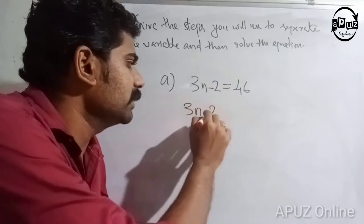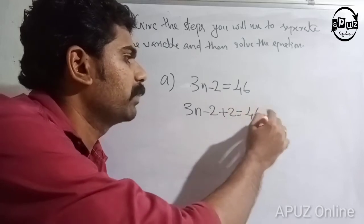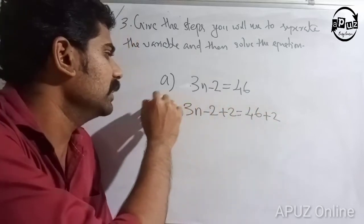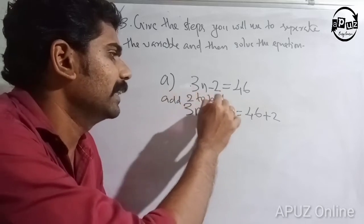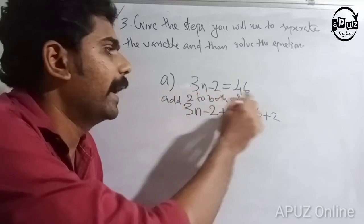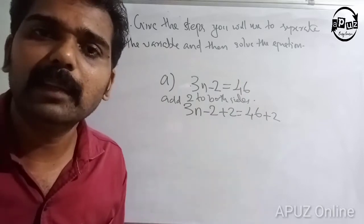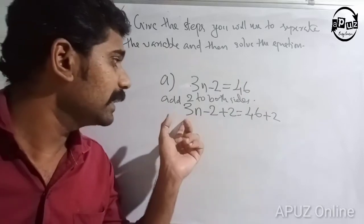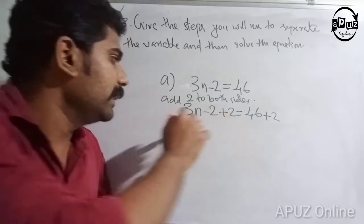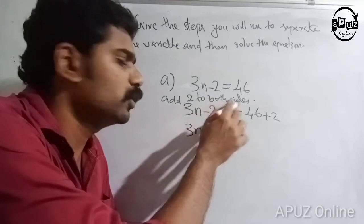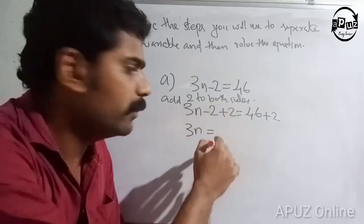Add 2 to both sides: 3n minus 2 plus 2 is equal to 46 plus 2. So 3n is equal to 48.